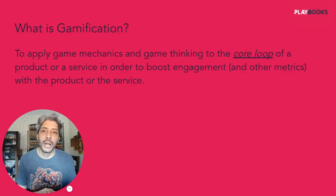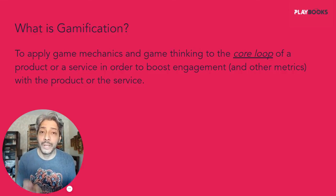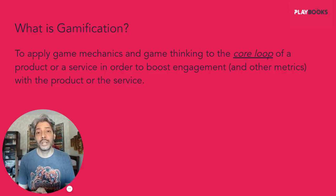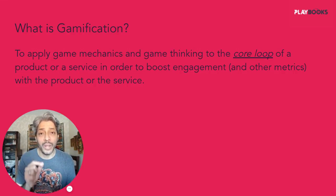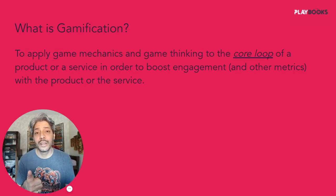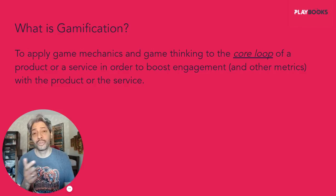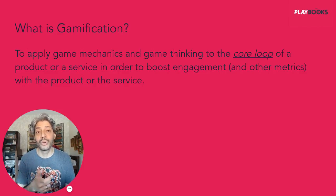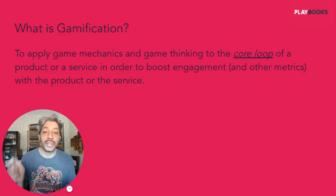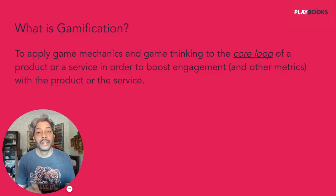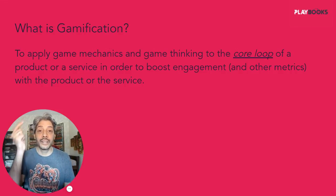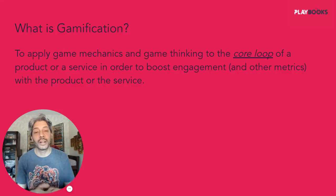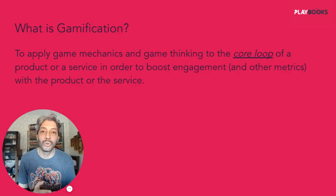Every product has a core loop. What is the core loop in Swiggy or Zomato? It is: look up a restaurant, find it, pick the food items you want, place an order, make a payment, wait for the order, and then tell the restaurant and Swiggy or Zomato whether you enjoyed the food and whether delivery was on time. Then the loop starts again — find something, place an order, eat it, give a rating, find something again.